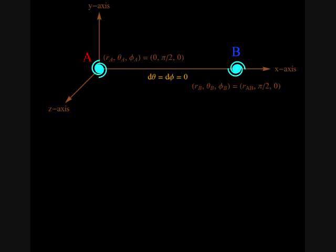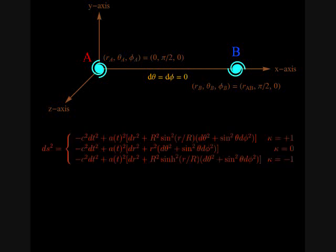Let's write the metric of a homogeneous and isotropic expanding universe, also called the Robertson-Walker metric. Here, lowercase r, theta, and phi are the co-moving spherical coordinates.